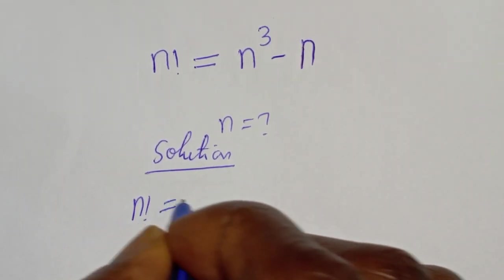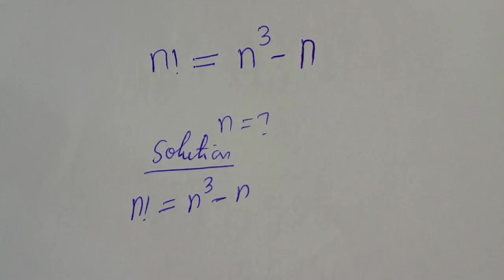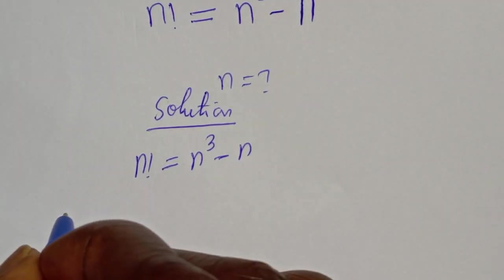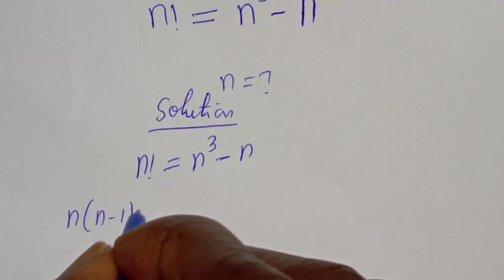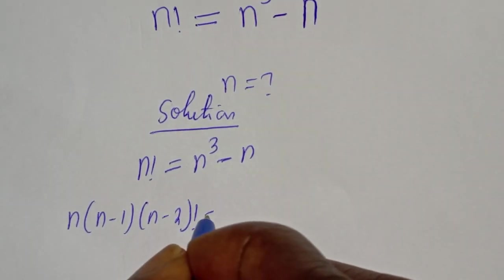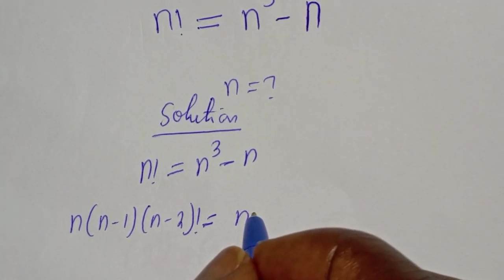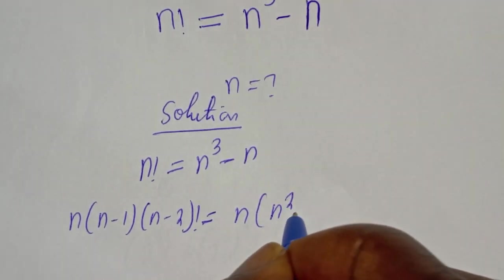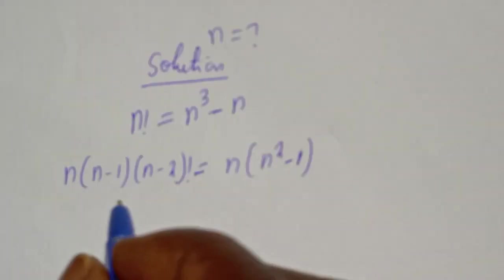n factorial is equal to n raised to power 3 minus n. Then, n factorial can be written as n bracket n minus 1 bracket n minus 2 factorial, is equal to n bracket n squared minus 1.